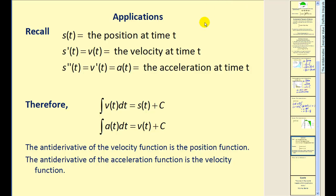Let's look at one more application. We know that the derivative of the position function gives the velocity function, and the derivative of the velocity function gives the acceleration function. We can use integration to undo this process: if we have the velocity function, we can integrate to find the position function, and if we integrate the acceleration function, we get the velocity function.